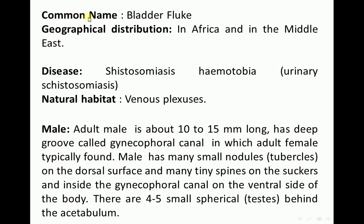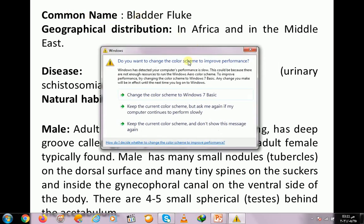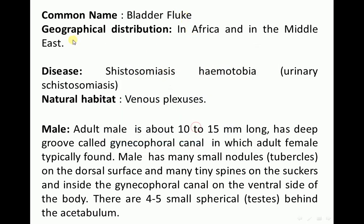The common name of this parasite is bladder fluke. Geographical distribution is in Africa and in the Middle East. The name of disease is schistosomiasis hematobia or urinary schistosomiasis. Natural habitat is in venous plexuses.